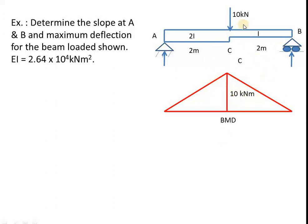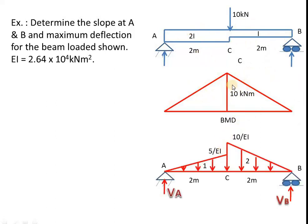When you draw the bending moment diagram, EI does not matter. But when you draw the M by EI diagram, you need to divide by EI of the corresponding section. Now if you convert this bending moment diagram into M by EI diagram, the first section has 2EI, so 10 by 2EI becomes 5 by EI. Then dividing by EI: previously the first section was I, next was 2I. So 10 by 2EI gives 5 by EI, then 10 by EI gives 10 by EI.